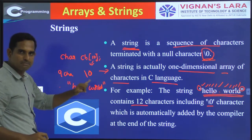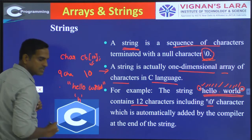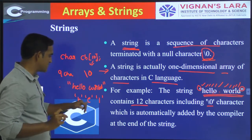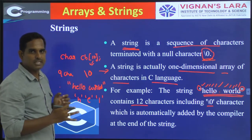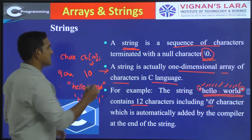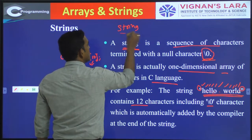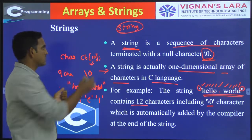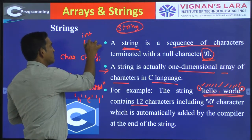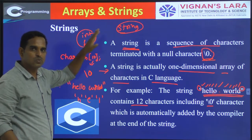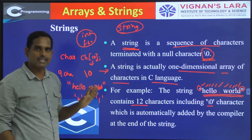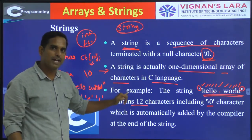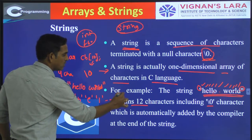Strings will be represented by double quotes, and characters will be represented by single quotes. The individual characters will be represented by single quotes and the complete string will be represented by double quotes. The C language doesn't have a string data type — it doesn't have a string data type. That is why we implement strings by using one-dimensional character arrays. You have other data types like int and float, but there is no separate data type for strings.